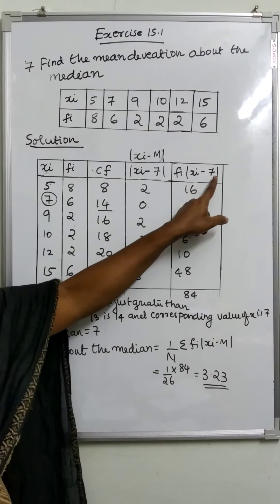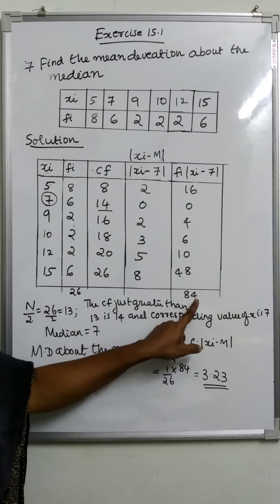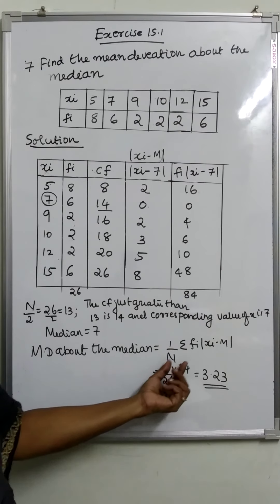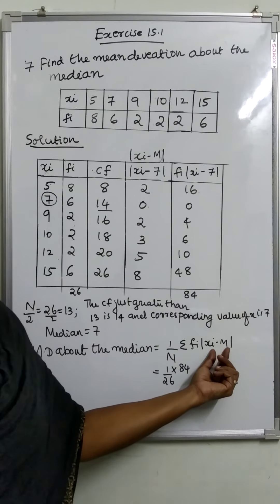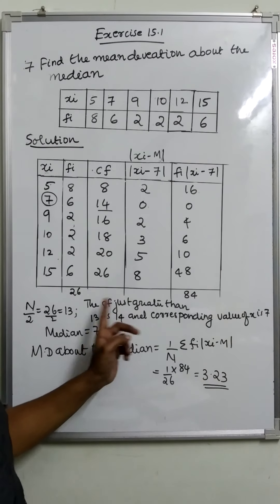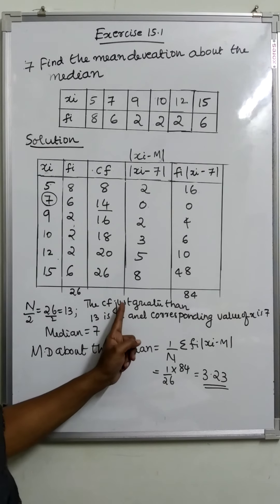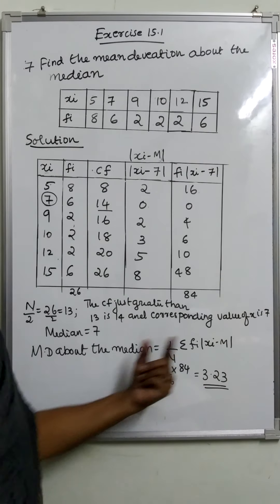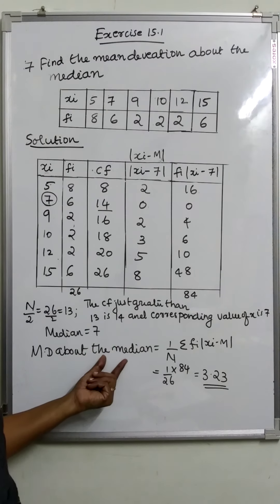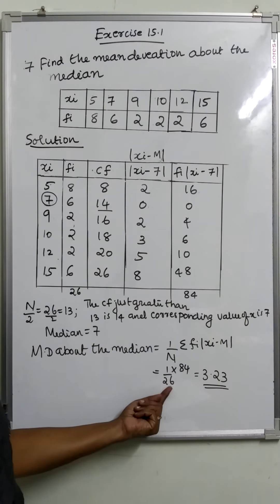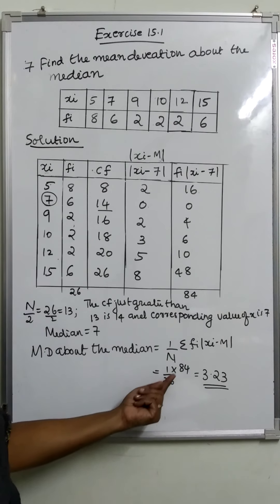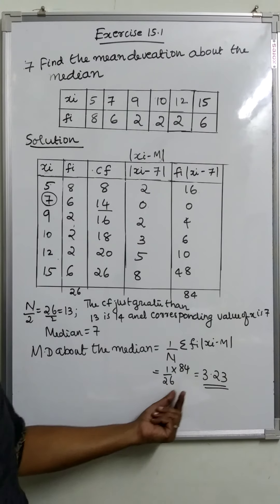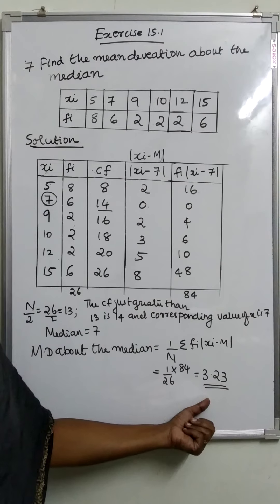fi into modulus xi minus 7. The mean deviation about the median is equal to 1 by n into sigma fi into modulus xi minus m, that is 84. The cumulative frequency just greater than 13 is 14, and the corresponding value of xi is 7, taken as the median. The mean deviation about the median is 1 by 26 into 84, that is 84 by 26 equal to 3.23.